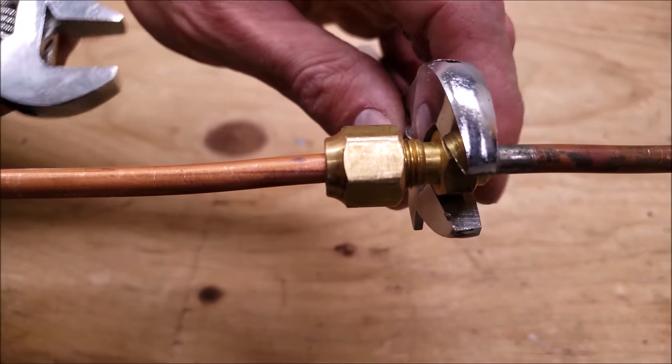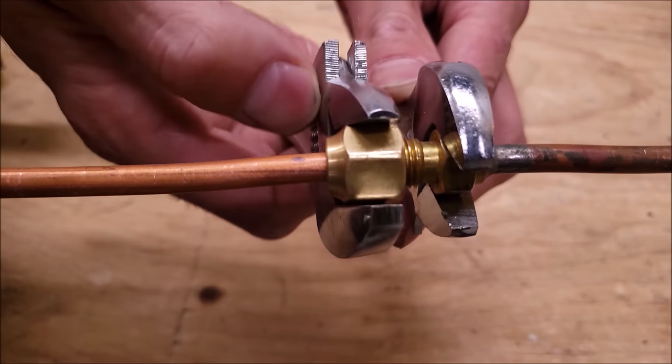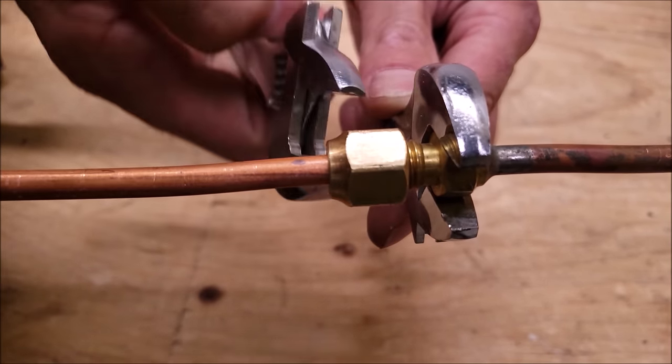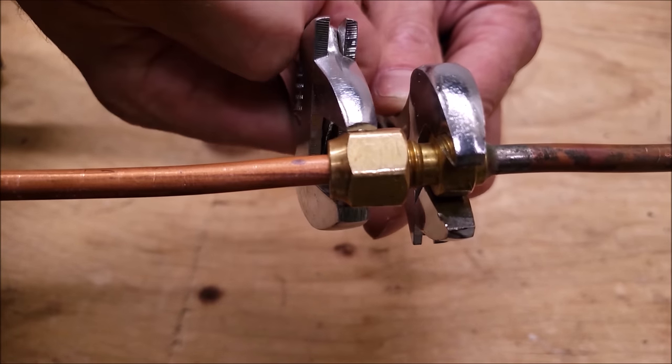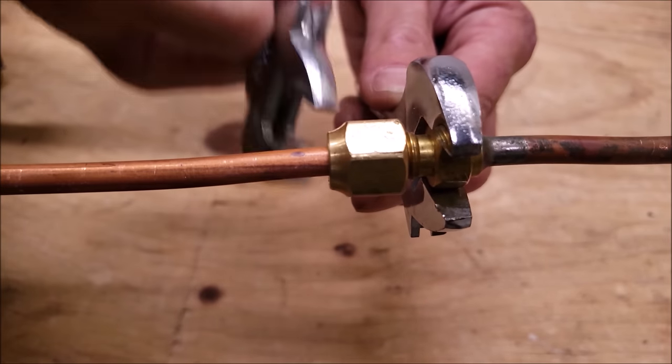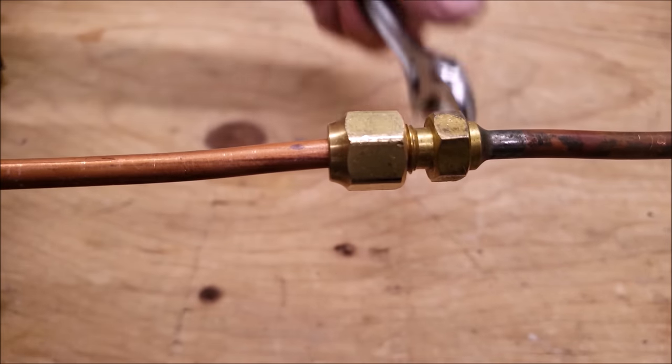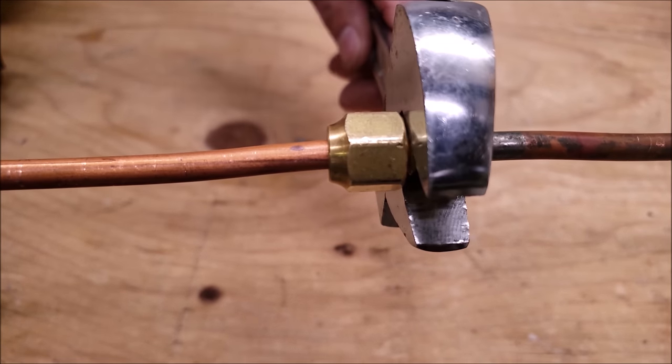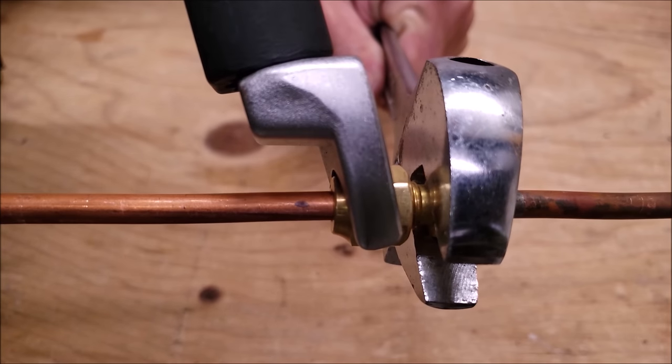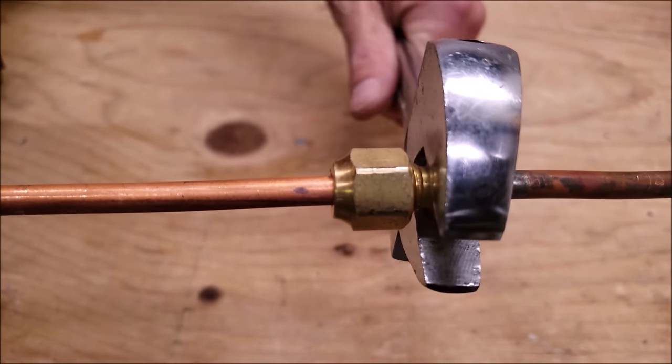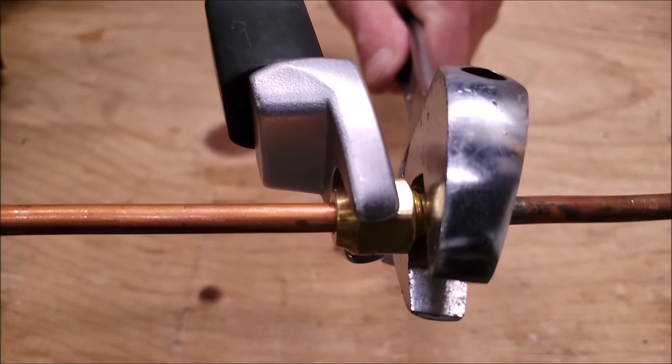I'm going to use two small adjustable wrenches just to make my flare, and then afterwards I'm going to use a torque wrench to tighten this down. This torque wrench is set at 11 foot-pounds, and we'll hear a click when it's done. That's it.